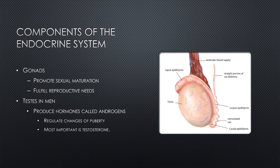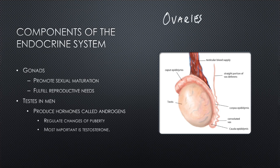Next up in the endocrine system, we have the gonads. The primary function of the gonads is to promote sexual maturation and fulfill reproductive needs. In men they are known as the testes and produce hormones called androgens, which regulate changes associated with puberty — the most important hormone being testosterone.